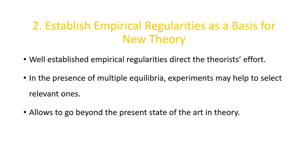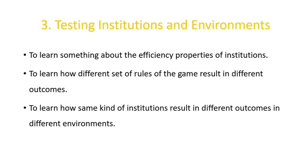The next purpose that experiments serve in economics is testing institutions and environments. To learn about the efficiency properties of institutions — for example, Chamberlain performed an experiment in class to study the claims of the perfectly competitive market structure — and to learn how different sets of rules of the game result in different outcomes. That is, we can check what kind of institutions will be more suitable, and how some institutions result in different outcomes in different environments.